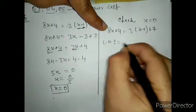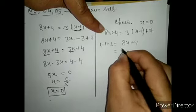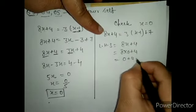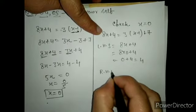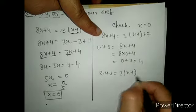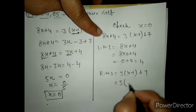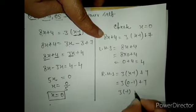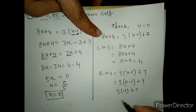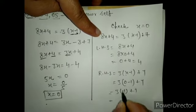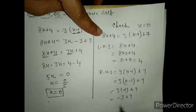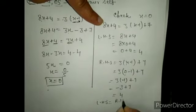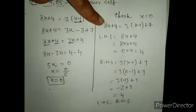For checking: given equation is 8x plus 4 equals 3(x minus 1) plus 7, and x equals 0. Left hand side: 8 times 0 plus 4 equals 0 plus 4 equals 4. Right hand side: 3 times 0 minus 1 plus 7 equals 0 minus 1 plus 7 equals minus 3 plus 7 equals 4. So left hand side equals right hand side — checked and verified.